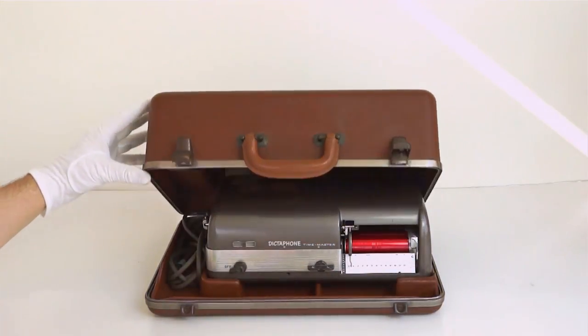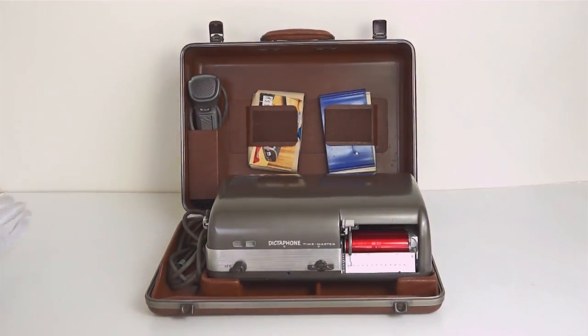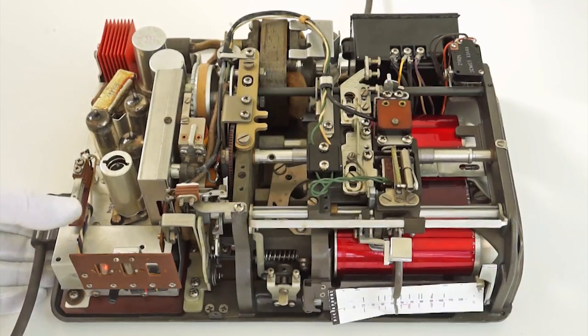The first Dictabelt players, which used vacuum tube amplifiers, were rather heavy and had numerous tiny mechanical parts.